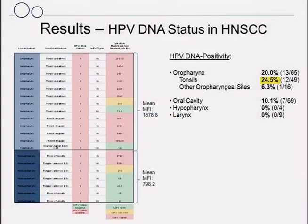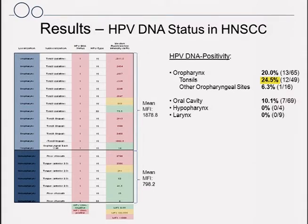I would like to show the results for the head and neck squamous cell carcinomas. We detected HPV DNA in 20% of samples in the oropharynx, 10% of the oral cavity, and no HPV DNA was detected in the hypopharynx and larynx. The highest prevalence of HPV DNA was detected in the tonsils, and stratifying by sample age, there was a significant increase to around 43% between the years 2005 to 2009.